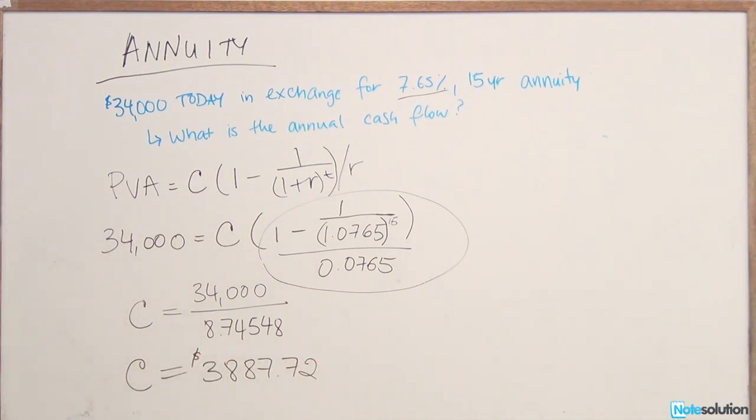So if you were to buy an annuity today for $34,000 that pays for 15 years at a rate of 7.65%, you would get $3,887 each year for the next 15 years. That's how you solve for the cash flow.